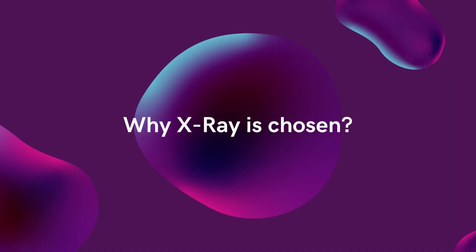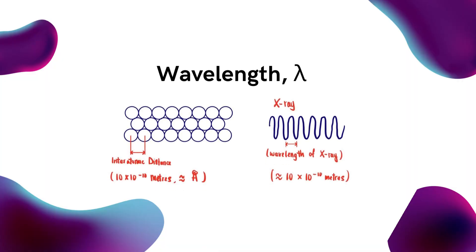Why is X-ray chosen? This is because the wavelength of X-ray is often the same order of magnitude as the spacing d between the crystal planes, 1 to 100 angstroms.